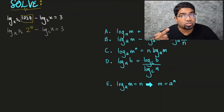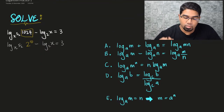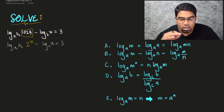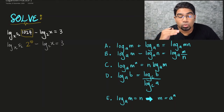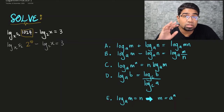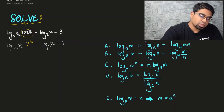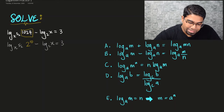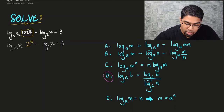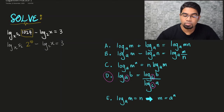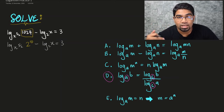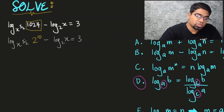Now let's try changing to base 2. There are many different log laws; I have written the main ones we are going to use in this question — I'll call them A, B, C, D, and E. As long as you know how to apply these log laws it's not a problem. To change the base we use Law D: log base A of B equals log base C of B over log base C of A.